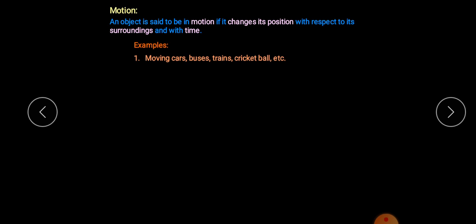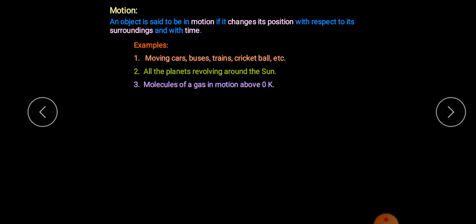Examples of motion: a moving car, bus, train, cricket ball, and so on. All the planets revolving around the sun. The molecules of a gas in motion above zero Kelvin — zero Kelvin is the lowest possible temperature, and above this temperature all gas molecules are in motion. These are some examples of motion.